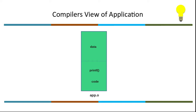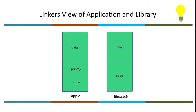Scenario two: what if a program spans two files? A program can span any number of C files. In this case the compiler at a time will only have a view of a single C file - it takes one C file as input and generates a relocatable object file. It will not have a view of the other file. Hence we can rightly reject the compiler as being responsible for assigning addresses.